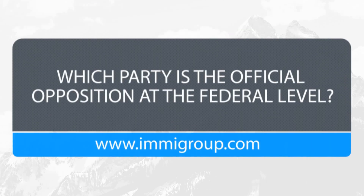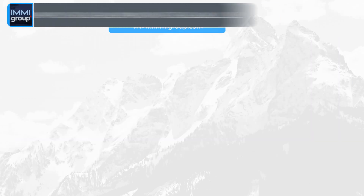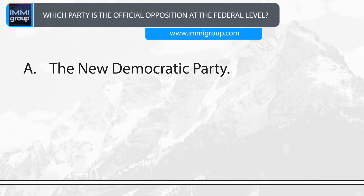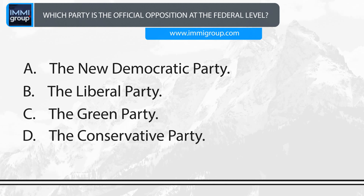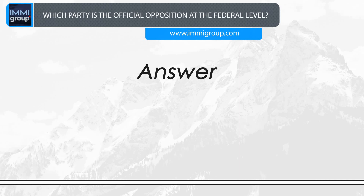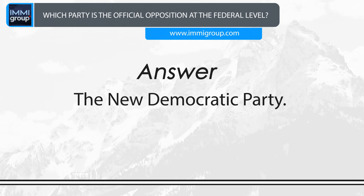Which party is the official opposition at the federal level? A. The New Democratic Party. B. The Liberal Party. C. The Green Party. D. The Conservative Party. Answer: The New Democratic Party.